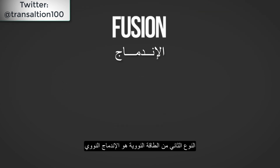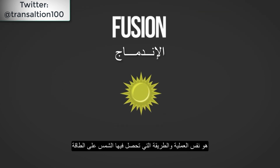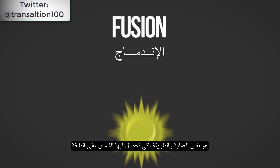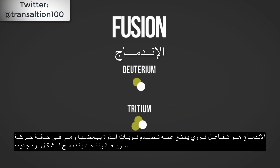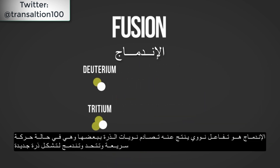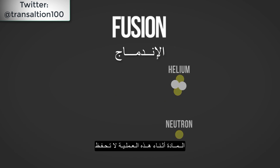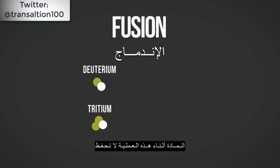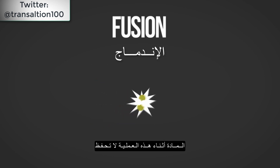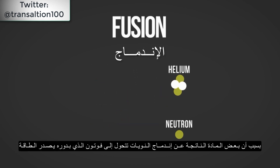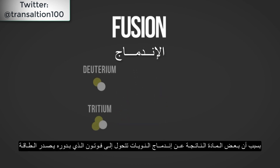The second type of nuclear energy is nuclear fusion, the same process that powers our sun. Fusion is a nuclear reaction in which atomic nuclei collide at a high speed and join to form a new type of atomic nucleus. During this process, matter is not conserved because some of the matter of the fusing nuclei is converted to photons, which produces energy.